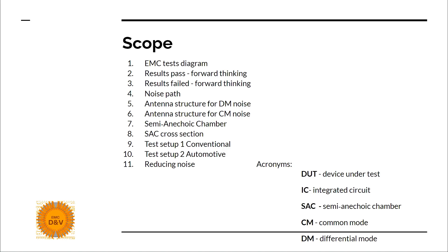We will use some acronyms: DUT — device under test, IC — integrated circuit, SAC — semi-anechoic chamber, CM for common mode noise and DM for differential mode noise. Common mode and differential mode noise are radiating from our device and we need to lower the amplitude.